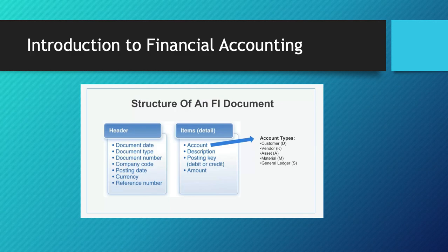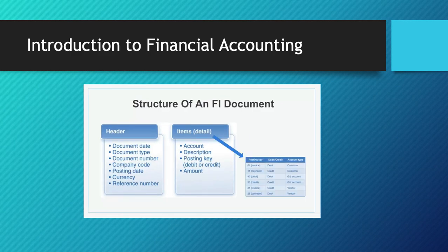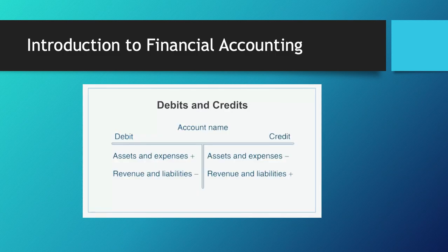Document type uses a two-character code. For example, DR is used for a customer invoice and DZ for a customer payment. Account types include: customer (D), vendor (K), asset (A), material (M), and general ledger (S). You can describe whether the account is debited or credited. The debit or credit is indicated by a posting key, which is a two-digit key code.